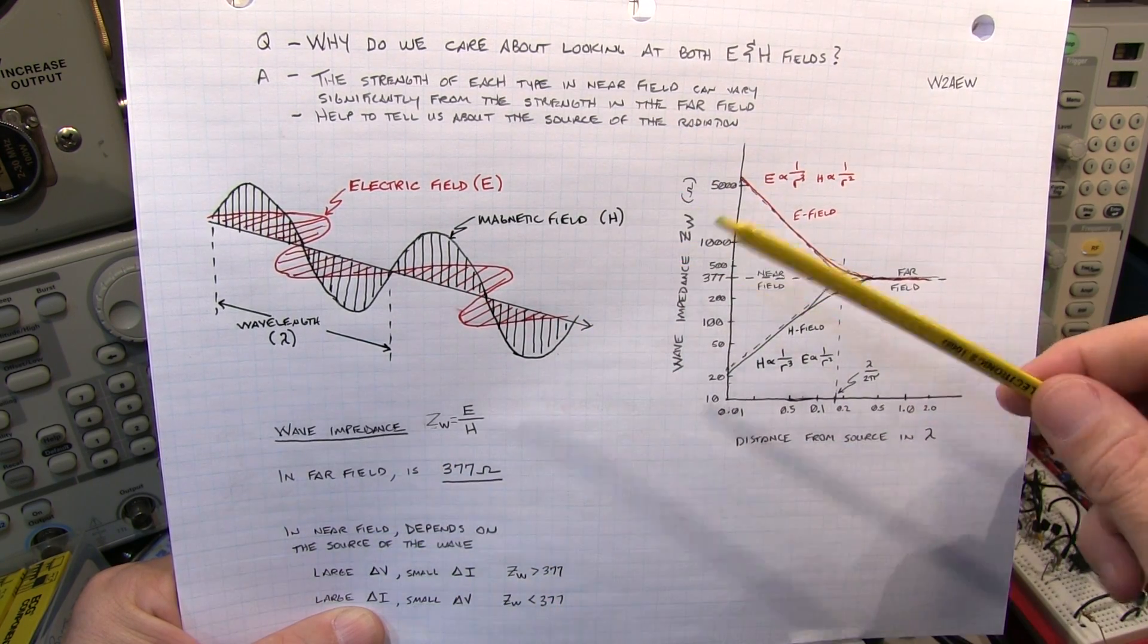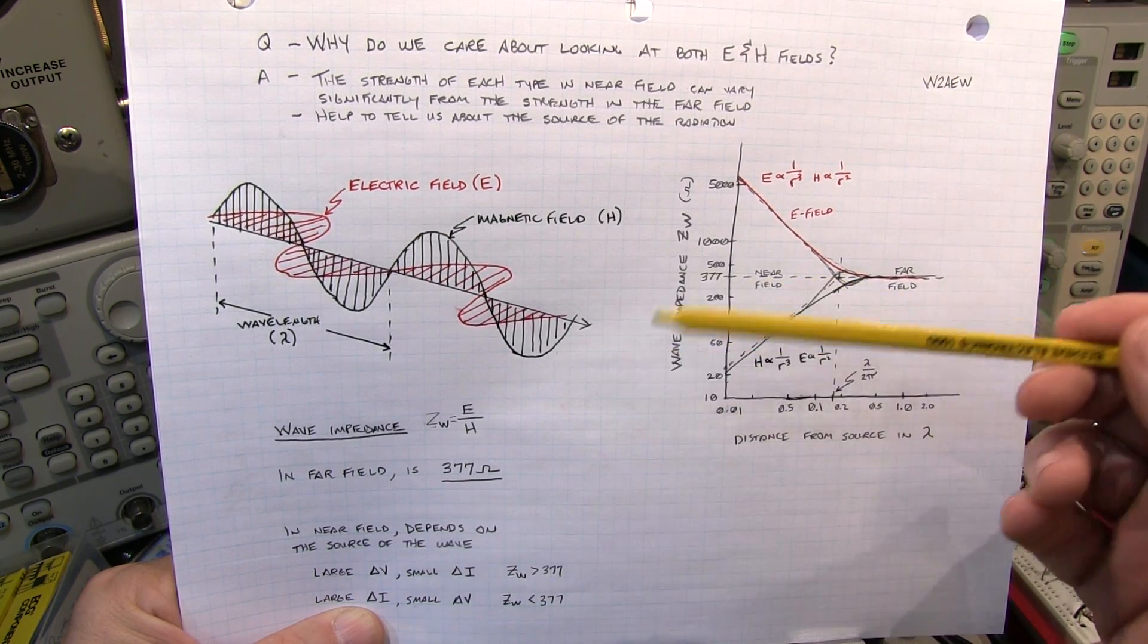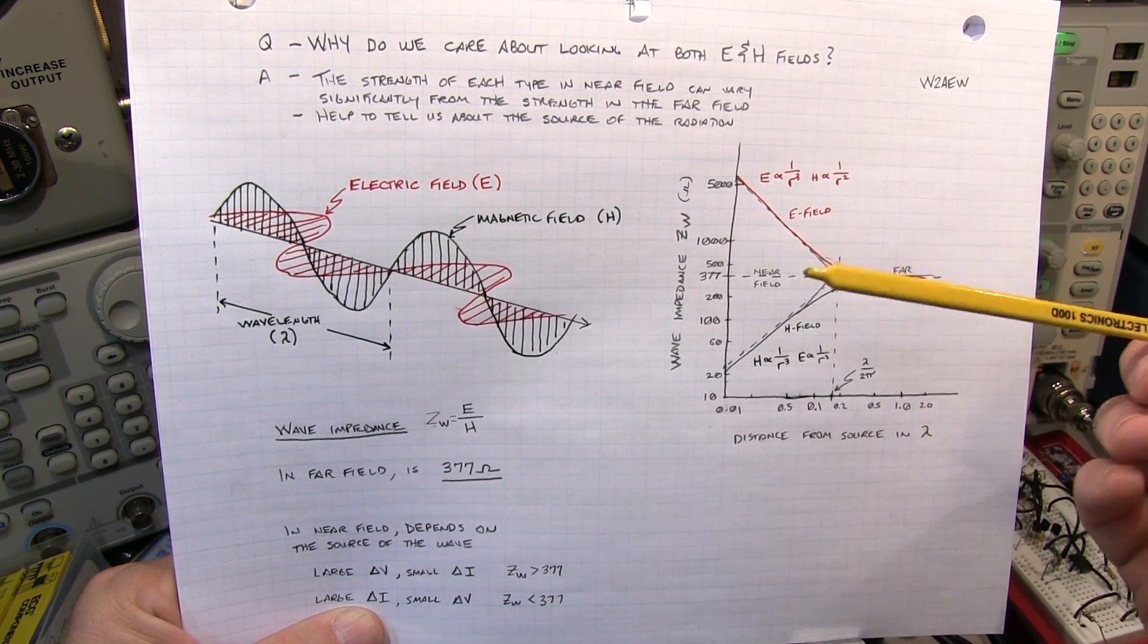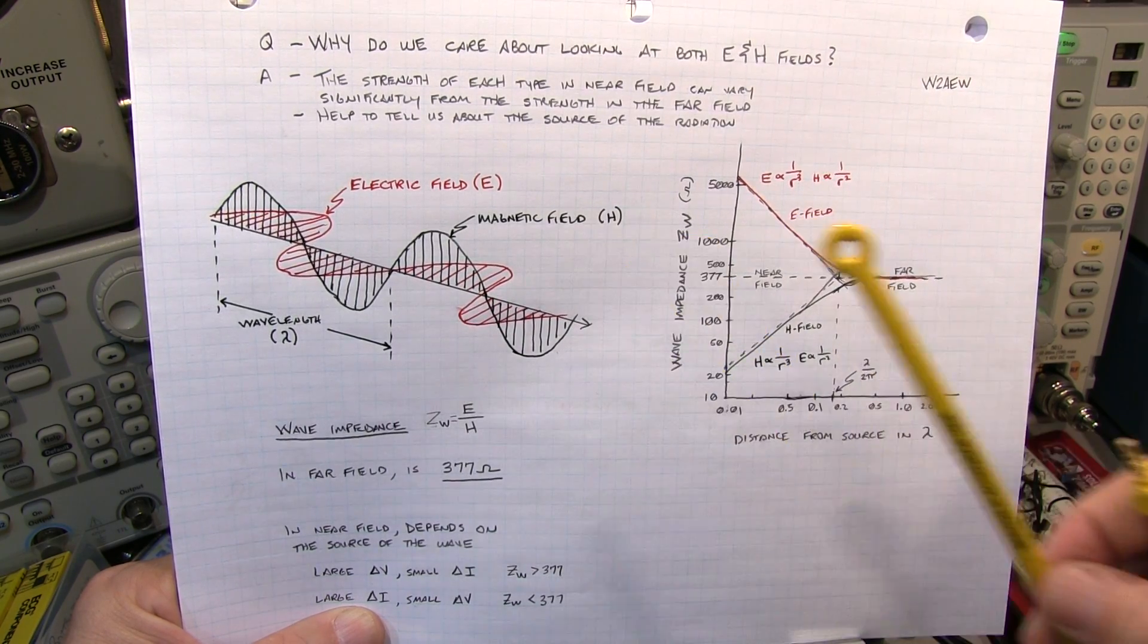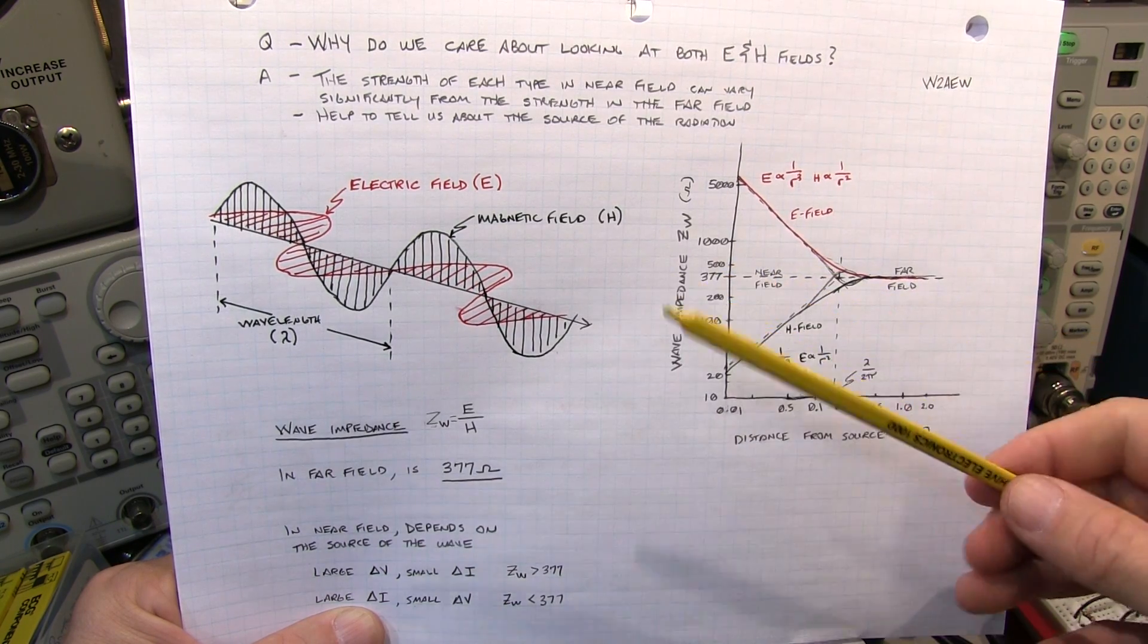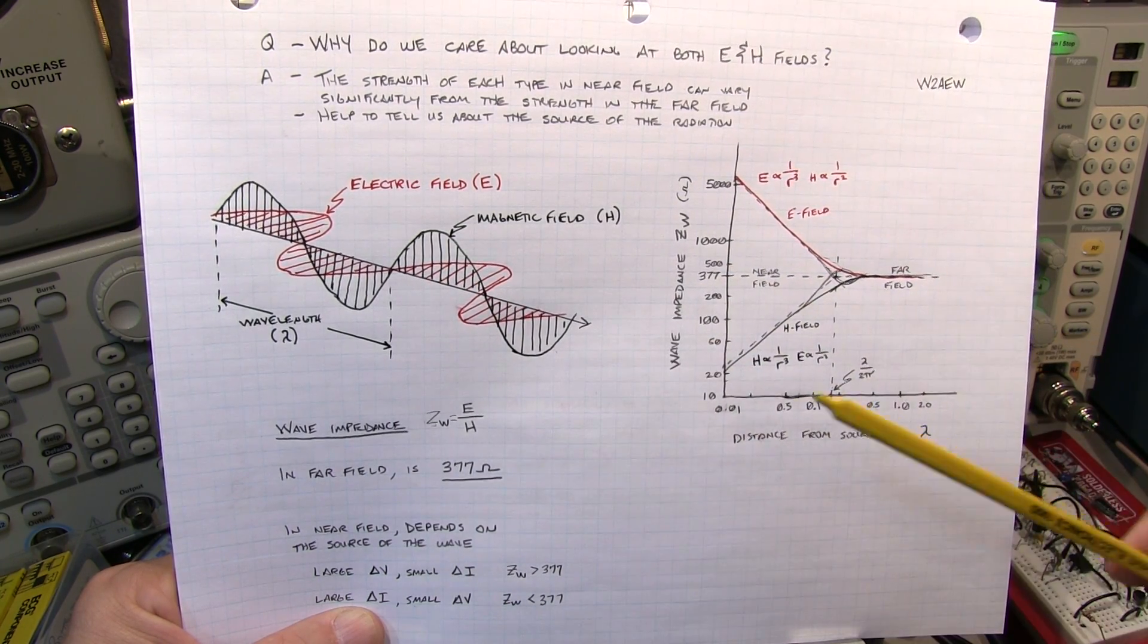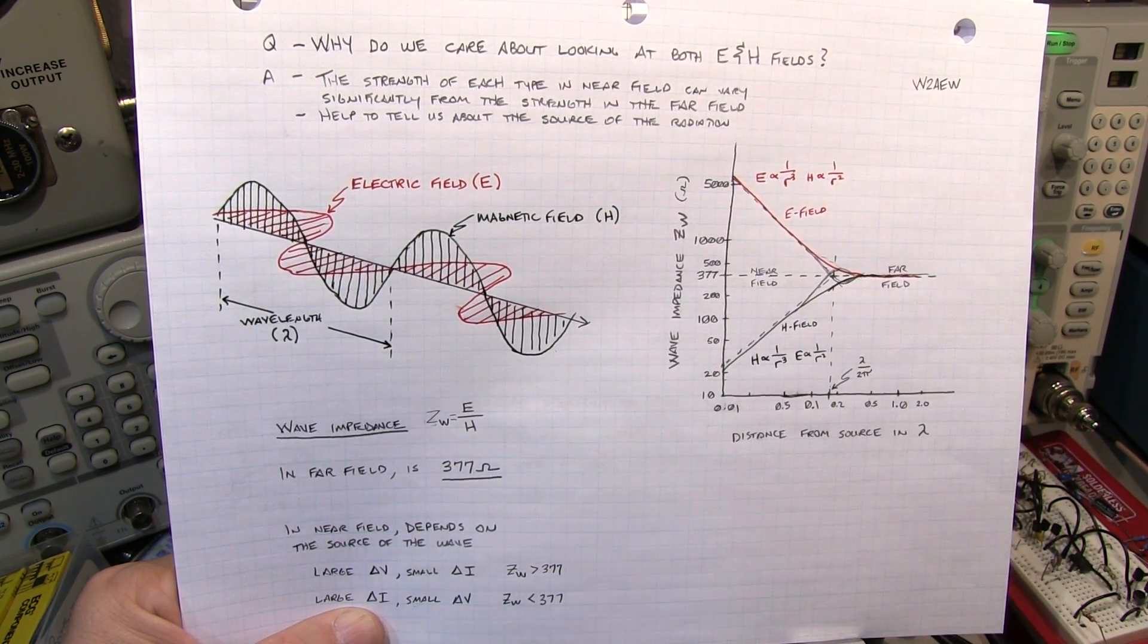Now, as I said, most high speed emissions are going to be dealing with a lot of current changes and generally lower impedances. So I find that the H field probes are a bit more effective in trying to help identify sources of these high frequency emissions. So I would kind of concentrate using that first. But you certainly have got some value in looking at both the E field and the H fields.